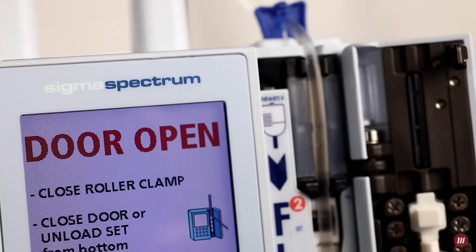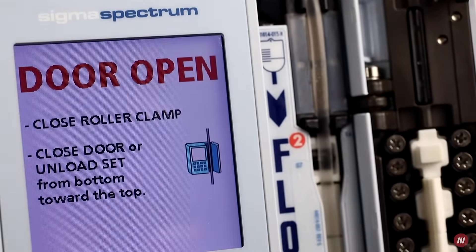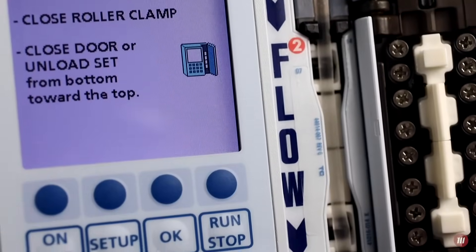The flow rate range capability of the Sigma Spectrum is 0.5 to 999 milliliters per hour.